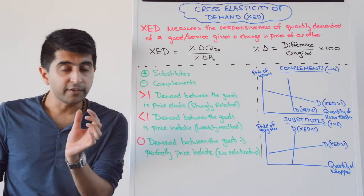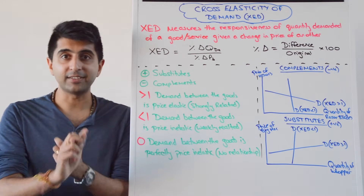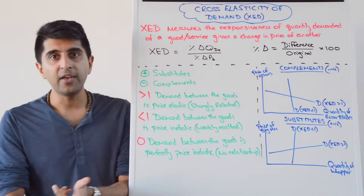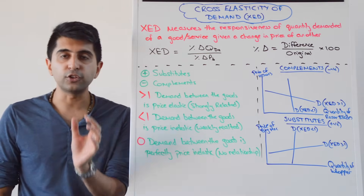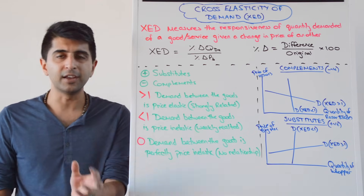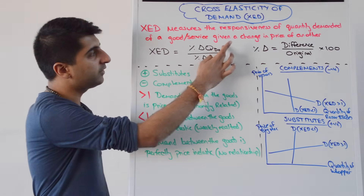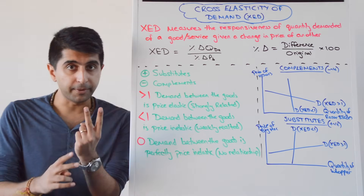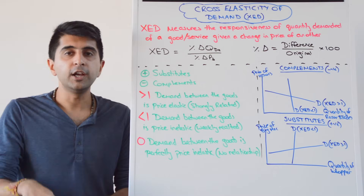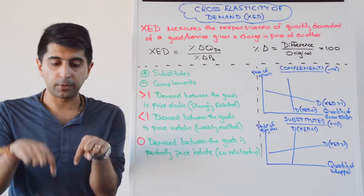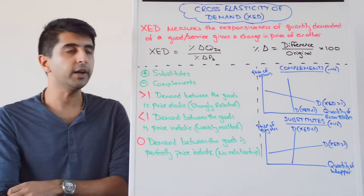We get two very important pieces of information: first the sign, i.e. whether XED is positive or negative, and then the figure. If the XED figure is positive, it means the two goods are substitute goods. If the price of a substitute goes up, quantity demanded for the other will go up as well — positive over positive gives a positive number. Whereas if the price of a substitute goes down, quantity demanded for the other will go down — negative over negative also gives a positive.